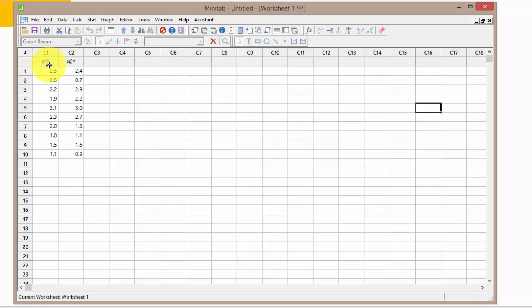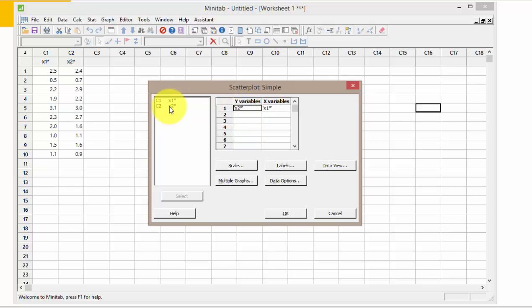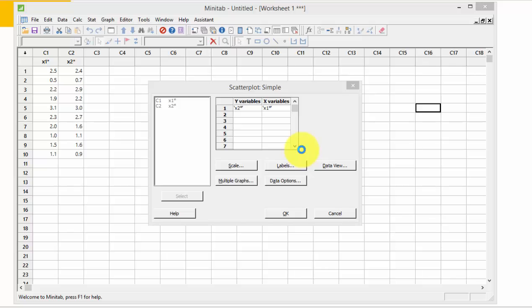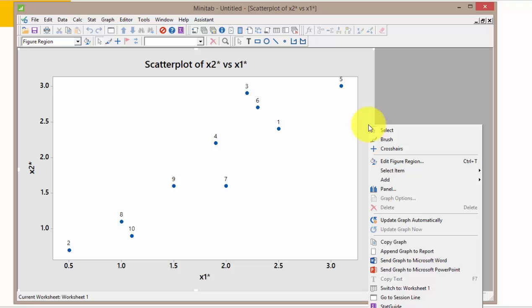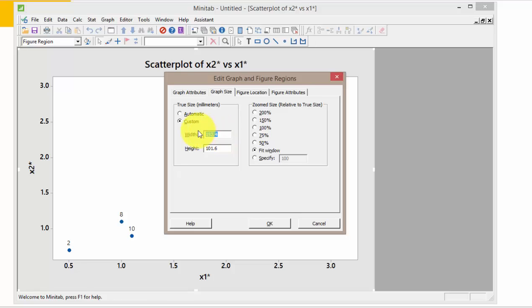So here, I've already input my data set into Minitab. Now let me create the scatterplot. I'm going to use x2 star as the y variable and x1 star as the x variable. I would also like to label the points so that I know which data point belongs to which data. So I go to data label and choose the row number and I click OK. So I now have a scatterplot but the size looks a bit off. So I'm going to make it square by right click and edit figure region. And I'm going to change this to 100.